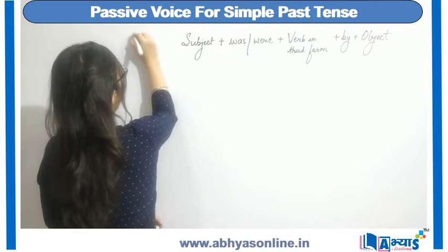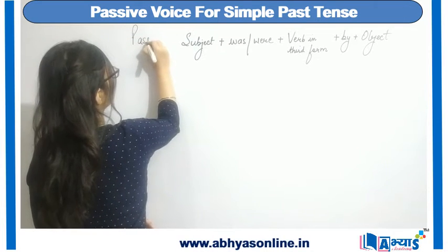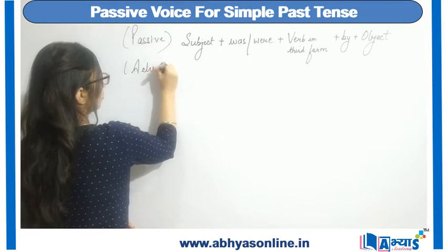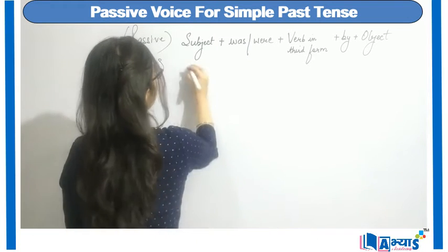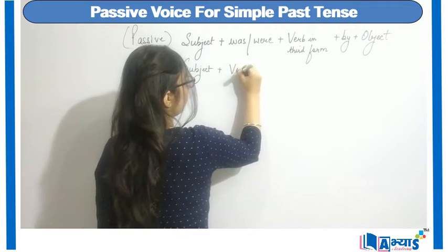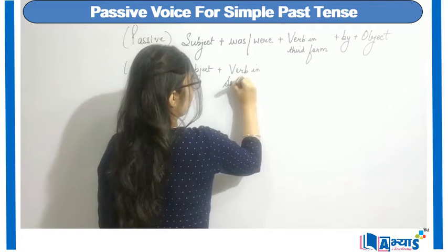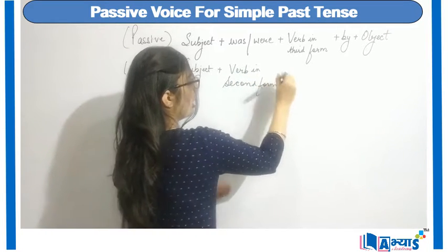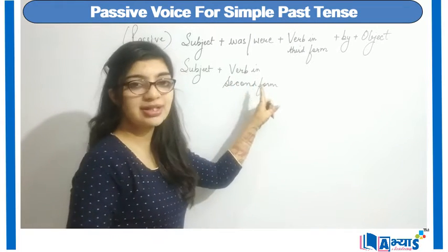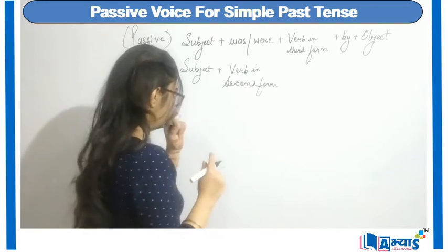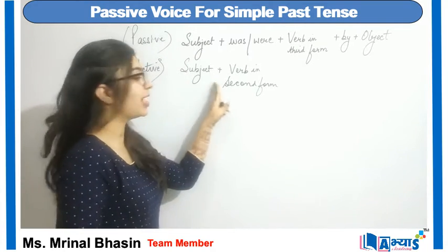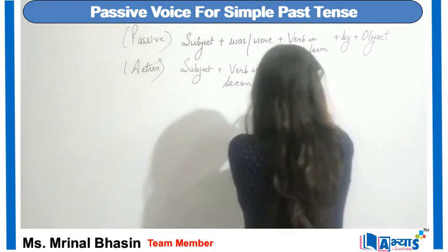This is the rule for passive voice. The rule for active voice in past form is: subject plus verb in second form. We use the verb in second form because we are referring to past tense. For present tense the verb will be in first form. So the full active rule is: subject plus verb in second form plus the object.